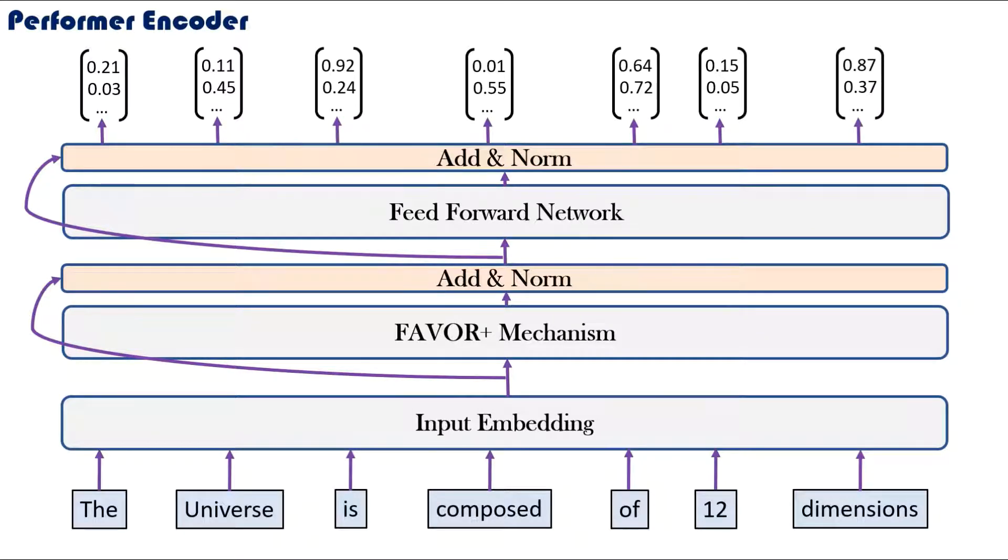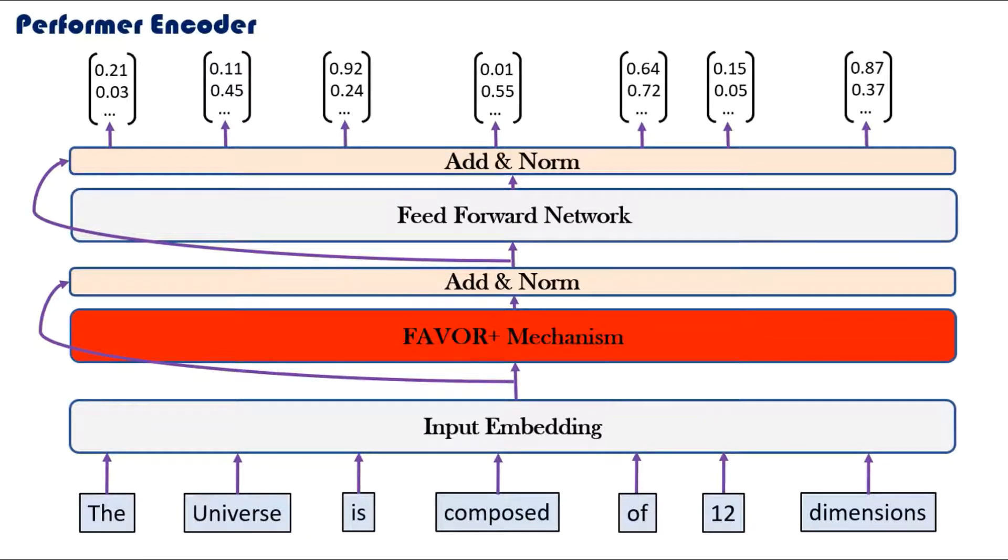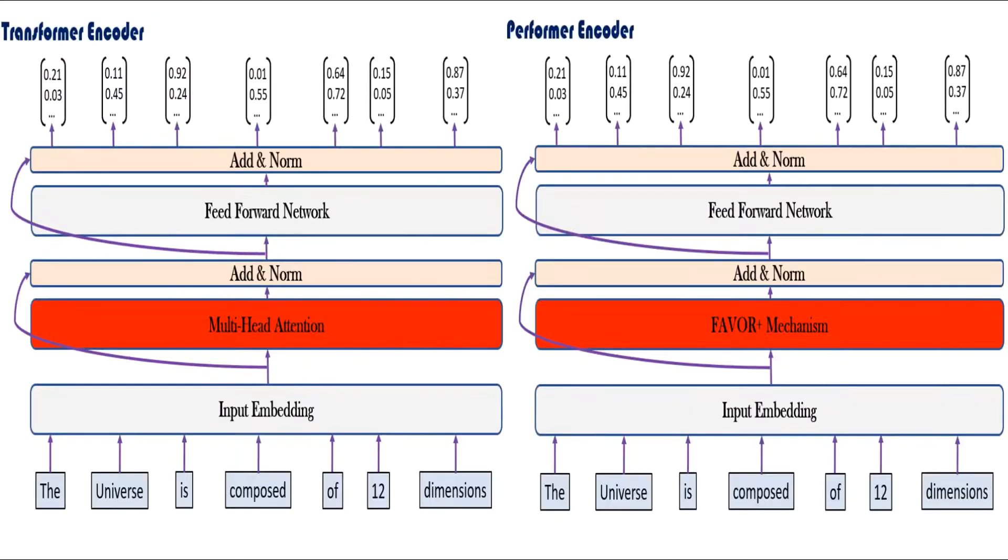It's replaced with something called the FAVOR+ mechanism. As a heads up, the FAVOR+ mechanism is an approximation of the attention mechanism which allows the Performer encoder to be faster than the Transformer in operation. As the only difference between the two models is in this red layer, the rest of this video will specifically focus on understanding how we can approximate the multi-head attention mechanism with the FAVOR+ mechanism.